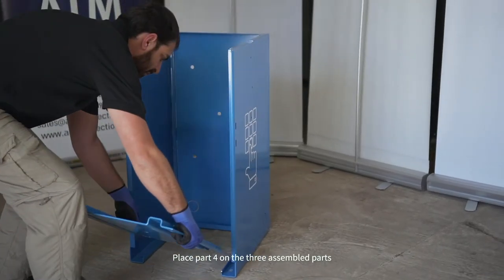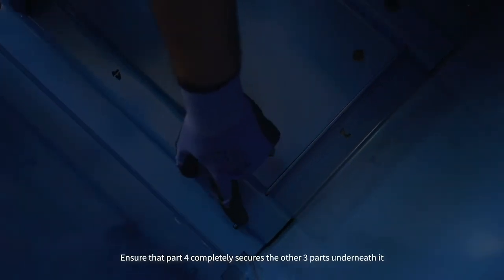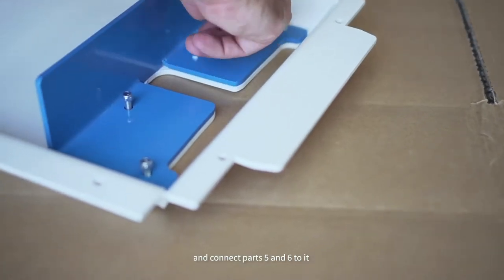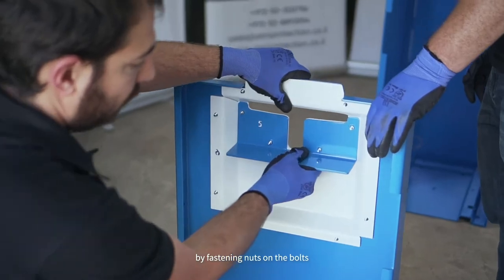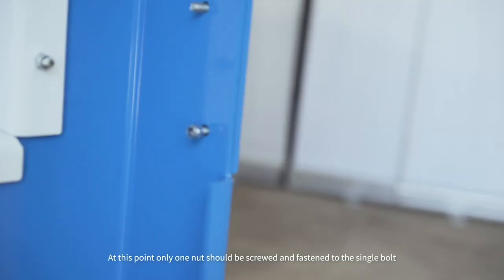Place part four on the three assembled parts, ensure that part four completely secures the other three parts underneath it. Take the door part seven and connect parts five and six to it by fastening nuts on the bolts. Attach the two hinge holders to the assembled door.